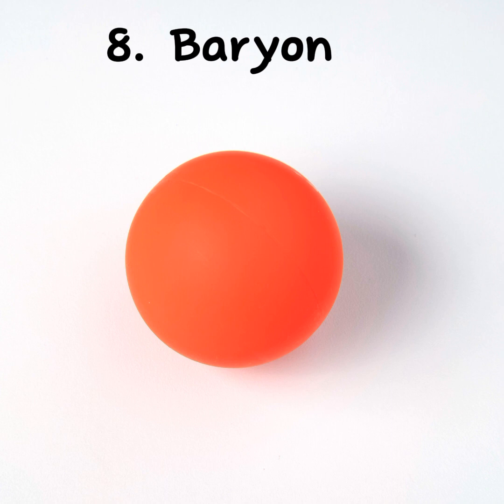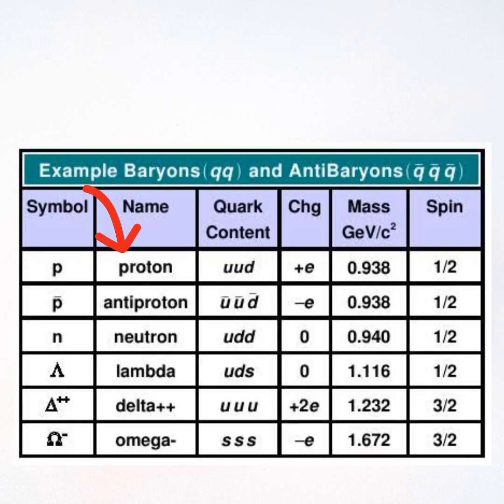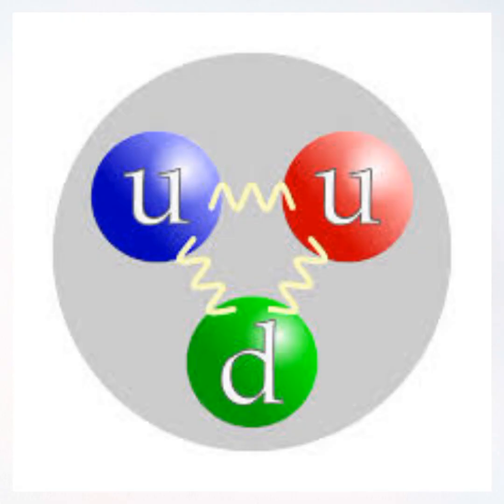8. Baryon: protons belong to a group of particles called baryons. Baryons consist of three quarks, elementary particles that are among the fundamental building blocks of matter.